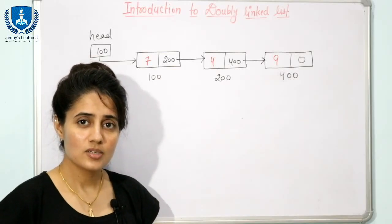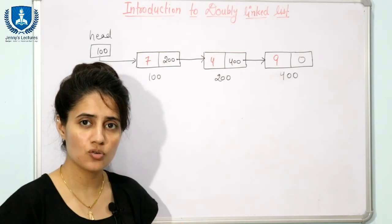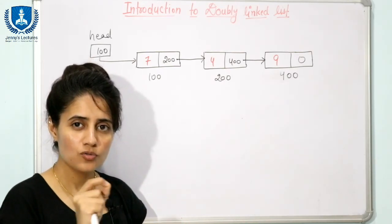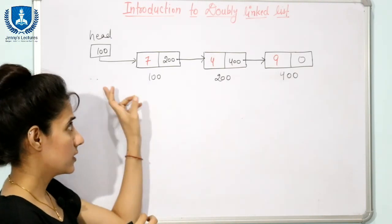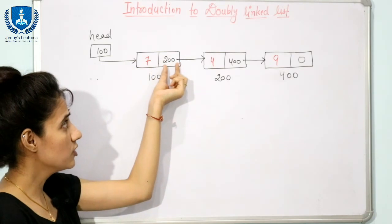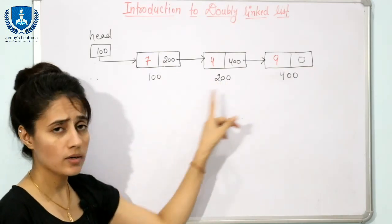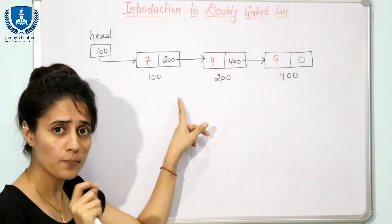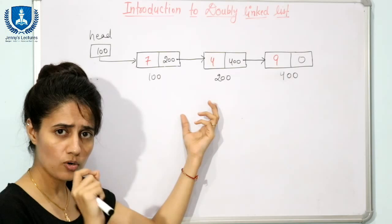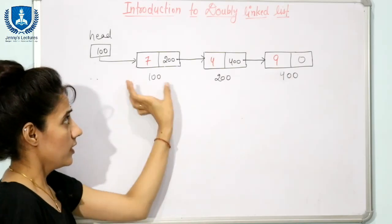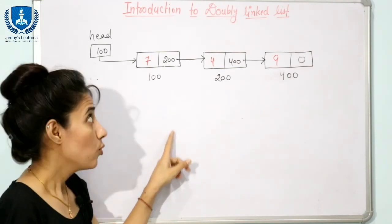We have discussed all about singly linked list so far — operations like insertion, deletion, reverse, traversal, and creation. I'll provide links to those videos in the description. In a singly linked list, each node has a data part and an address part — a pointer to the next node — storing addresses like 100, 200, 400 in random memory locations. This single link to the next node is why it is called a singly linked list.